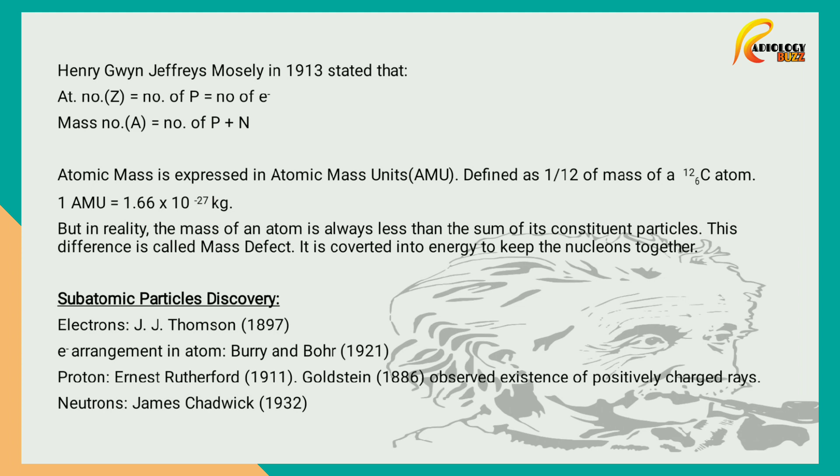The discovery of subatomic particles. Electrons were discovered by J.J. Thomson in 1897, and the arrangement of electrons in an atom was proposed by Burry and Bohr in 1921. Protons: Goldstein in 1886 observed the existence of positively charged rays, but then he didn't know that these were protons. It was Ernest Rutherford in 1911 who discovered them as protons. Neutrons were discovered by James Chadwick in 1932.